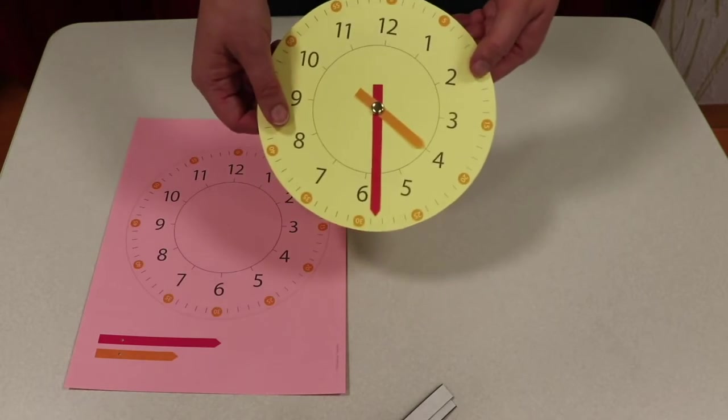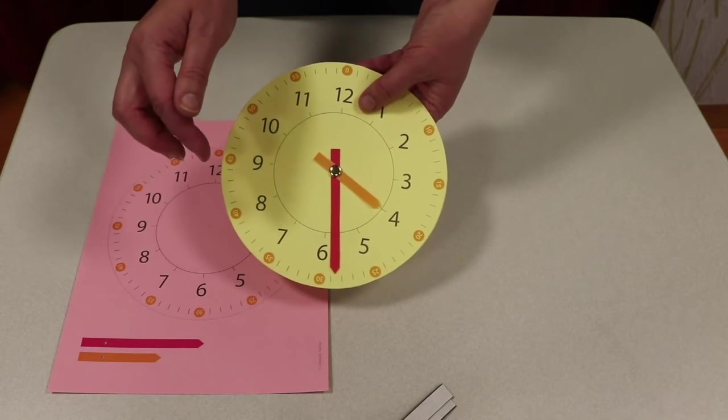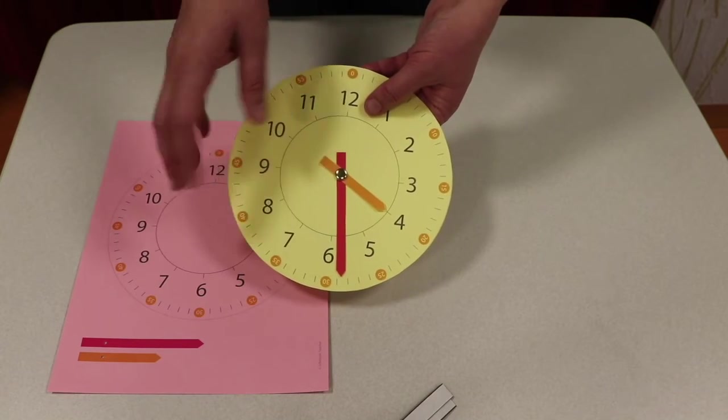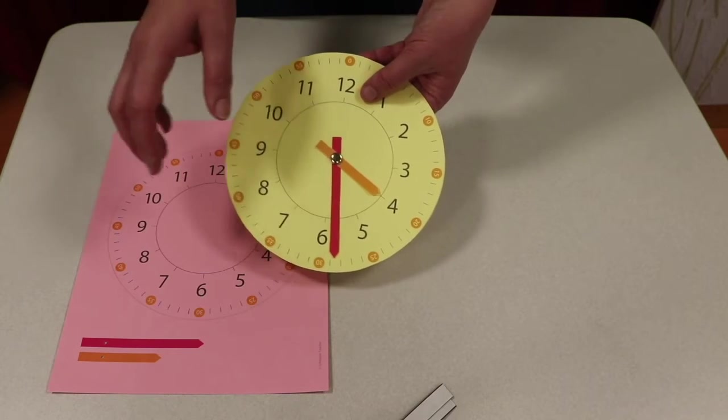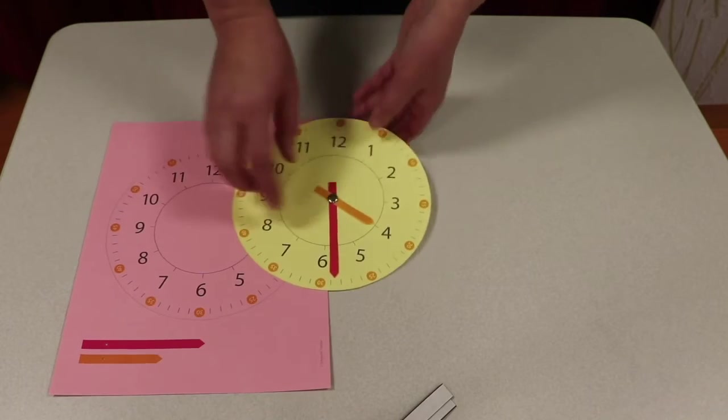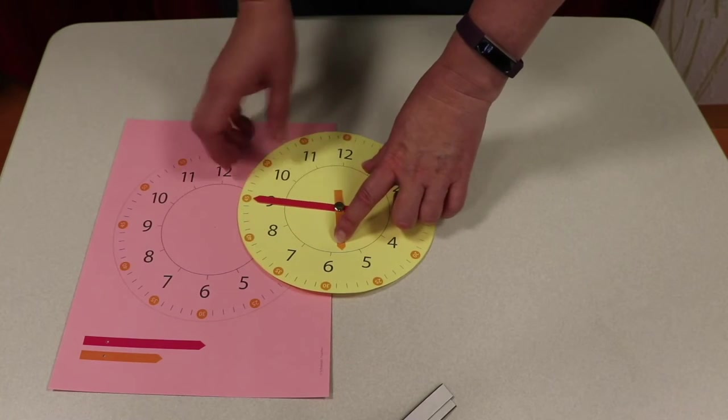And one of the things that's nice with these clocks is you can practice telling time. So if mom says dinner's at 5:45, you can say, oh, I know how to tell that time. And then you can just set up the clock and show her what 5:45 is.